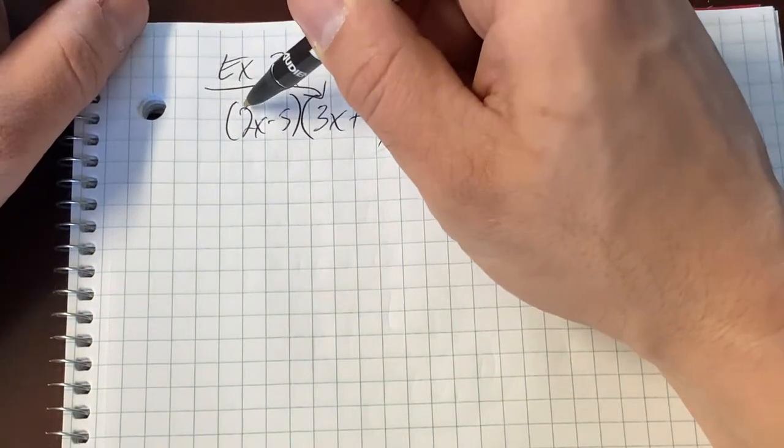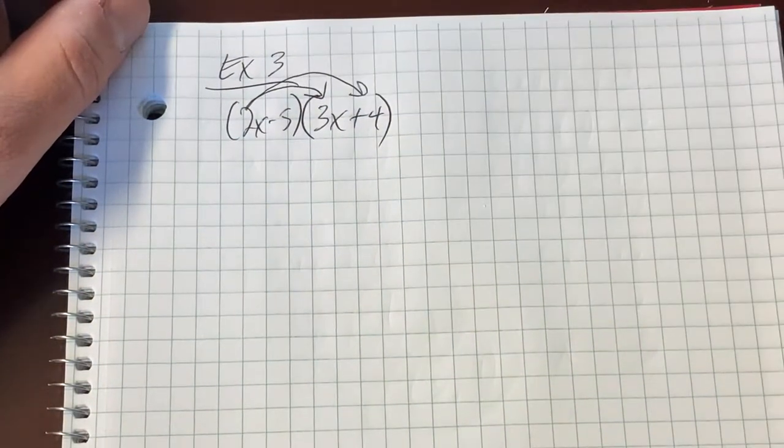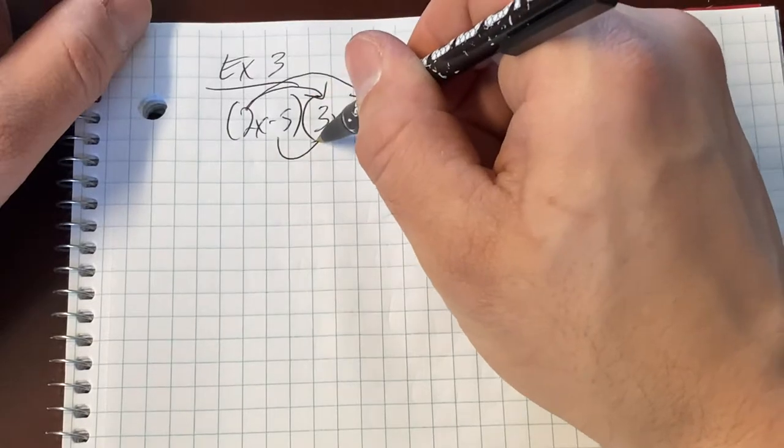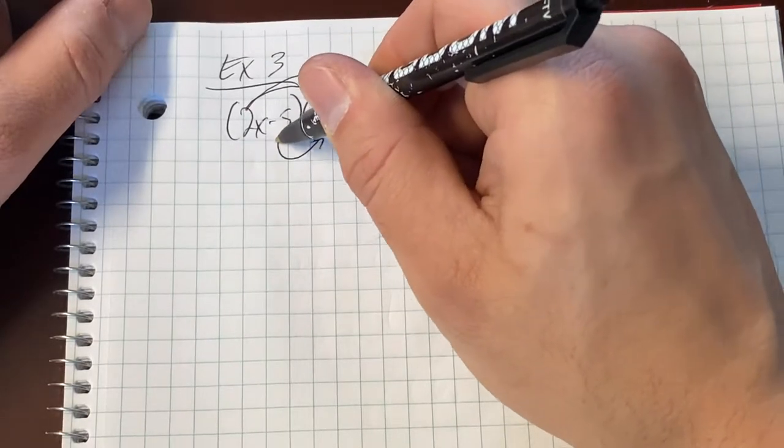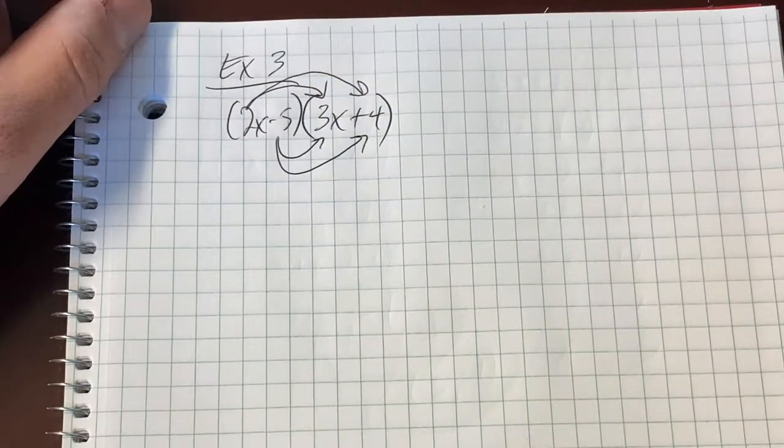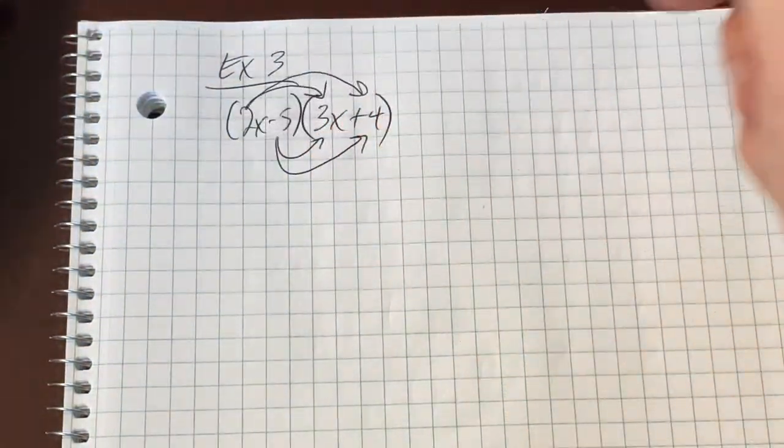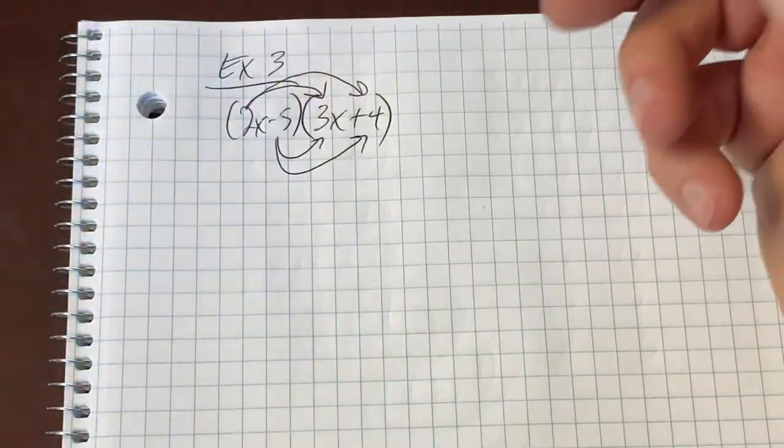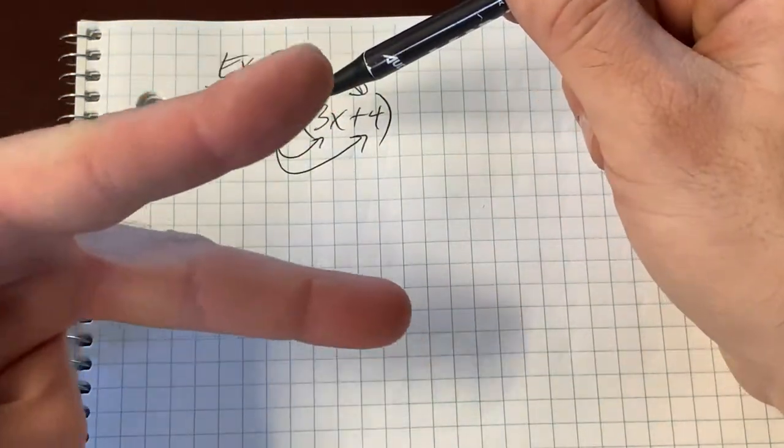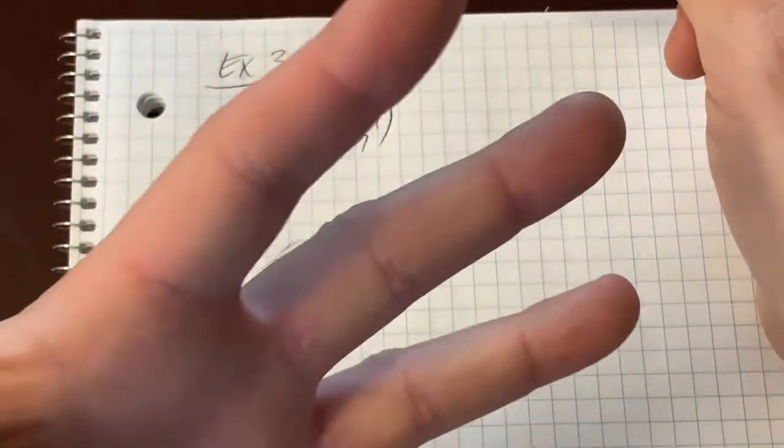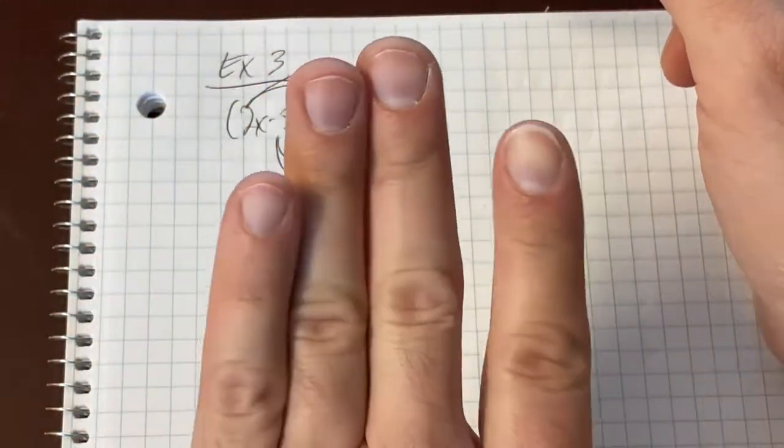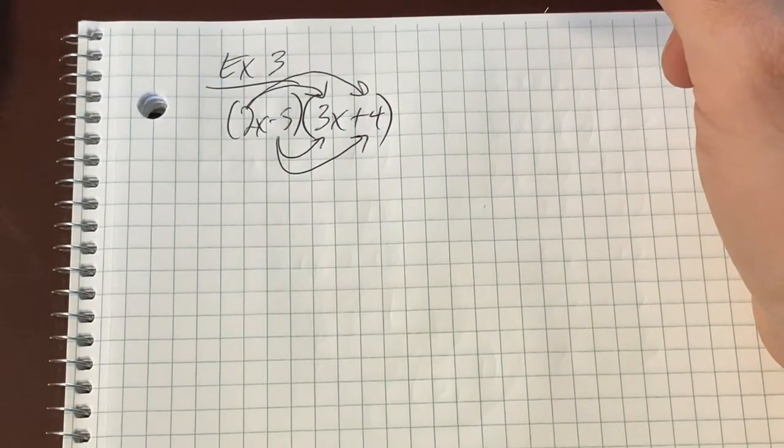This 2x needs to multiply the 3x and the positive 4. And this negative 5 needs to multiply the 3x and the positive 4. So we have to do the distributive property twice. We have to distribute the 2x, that's the first time, and we have to distribute the negative 5, that's the second time. There's going to be four products, four, four products that we have to find here.